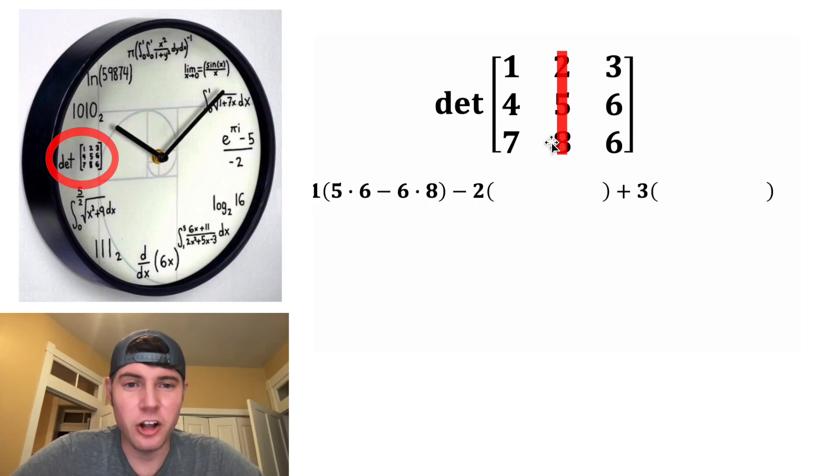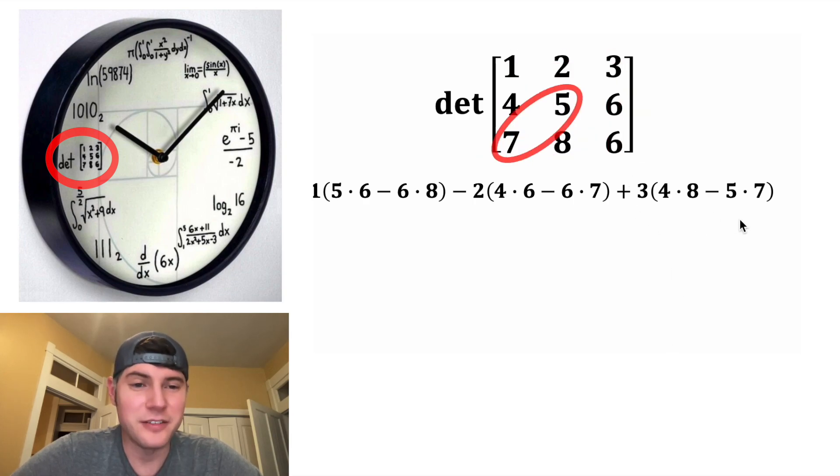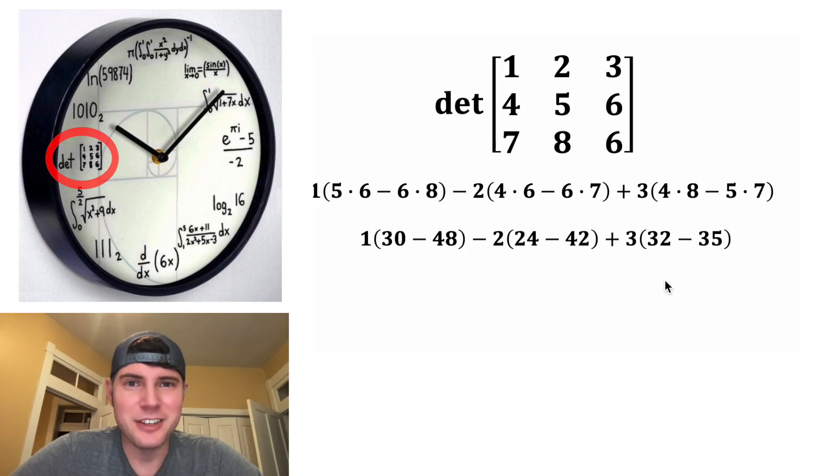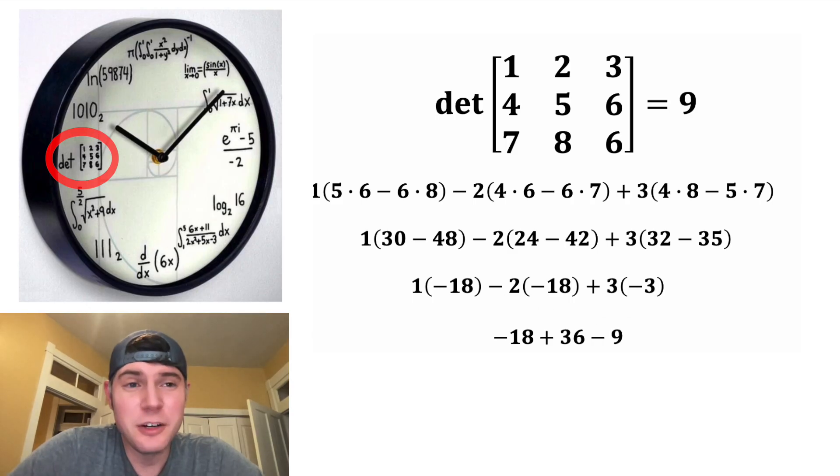For this parentheses, we're going to find the column and the row that contain the two. And we'll do the four times the six minus the six times the seven. And then for the third one, we'll get rid of that row and column. And it's going to be four times eight minus five times seven. And then here's all this math done. And 30 minus 48 is negative 18. 24 minus 42 is negative 18. And 32 minus 35 is negative three. So that's negative 18 plus 36 minus nine. And that's equal to nine. So this is equal to nine. And that's why it's at the nine o'clock hour.